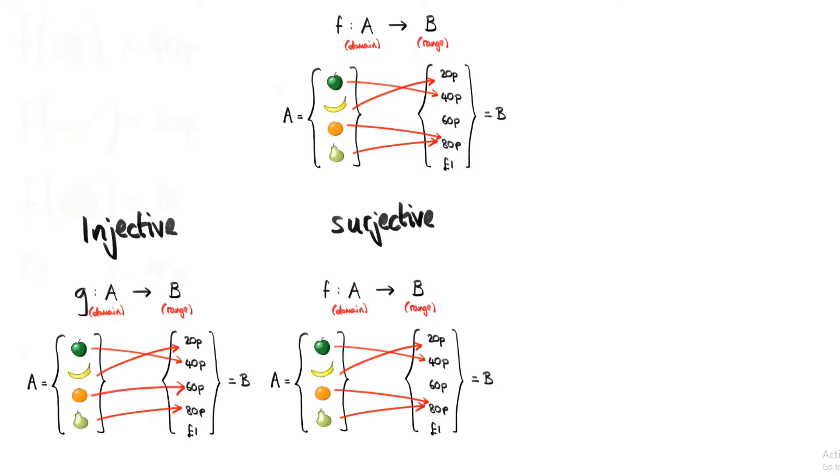We can convert our original function into a surjective function just by removing those elements from B they don't have an arrow pointing towards them. Since we haven't changed what the function's doing to each of the inputs, does that just mean we can continue to use f as the name of our function?